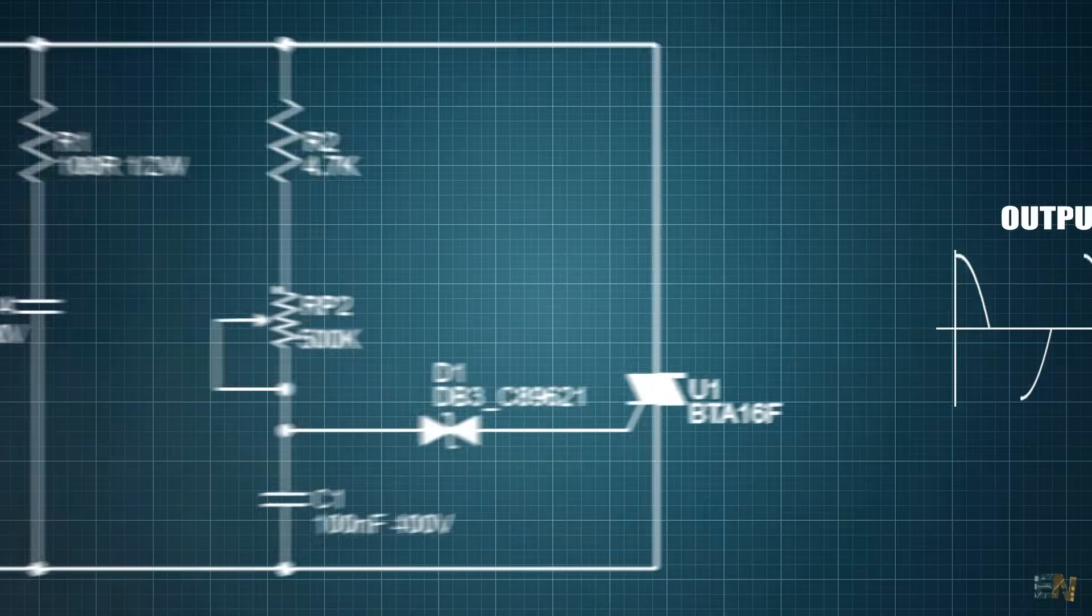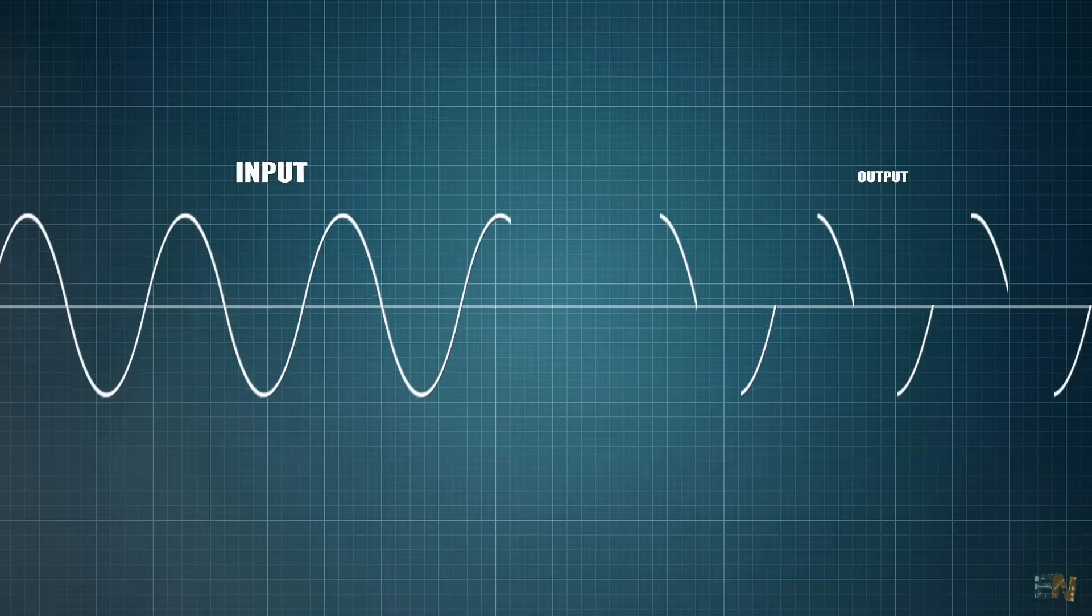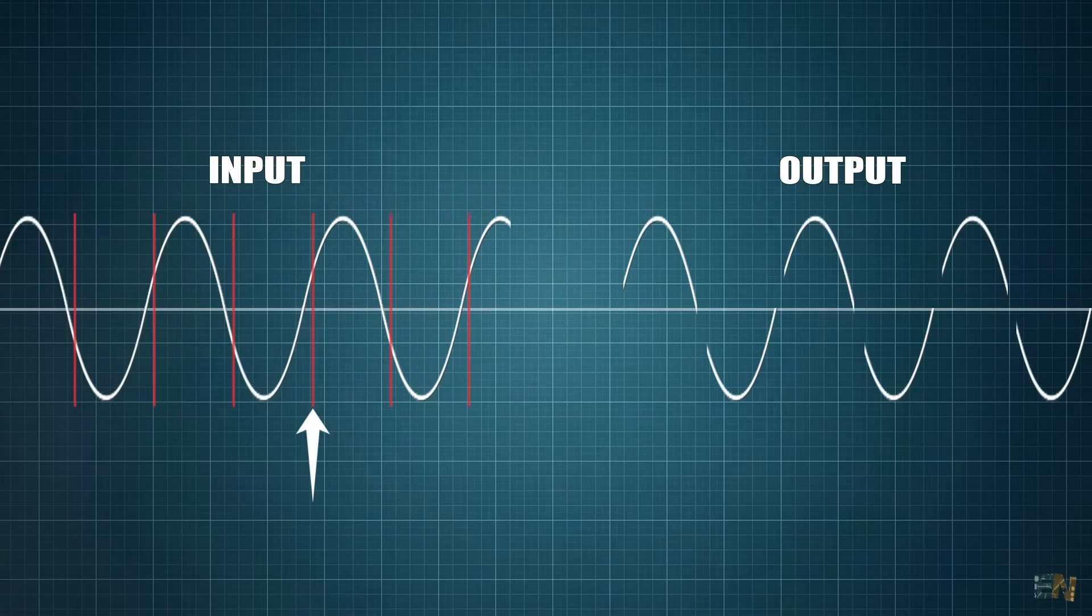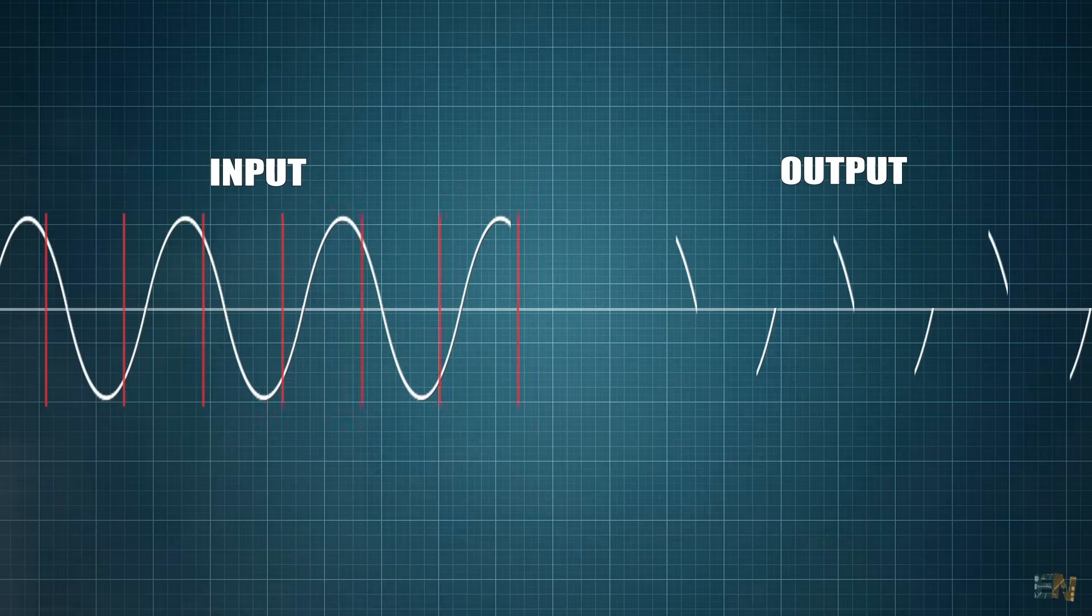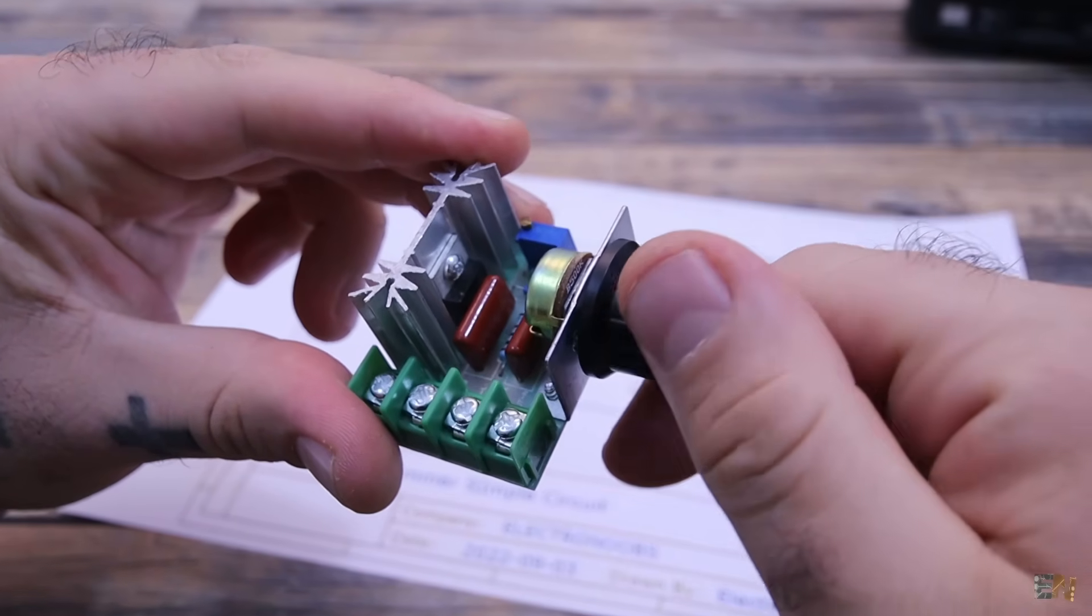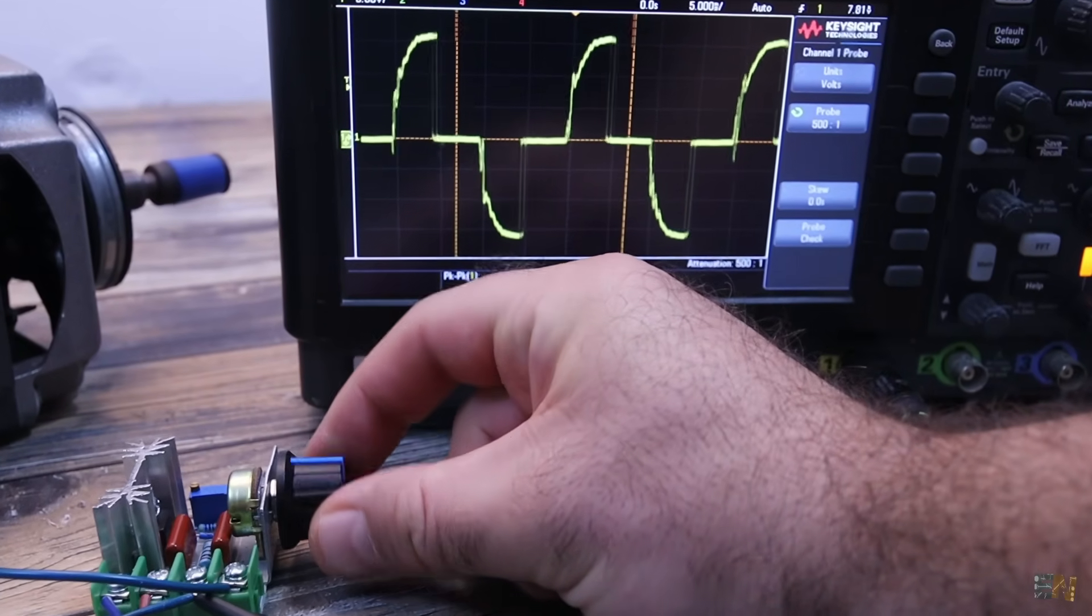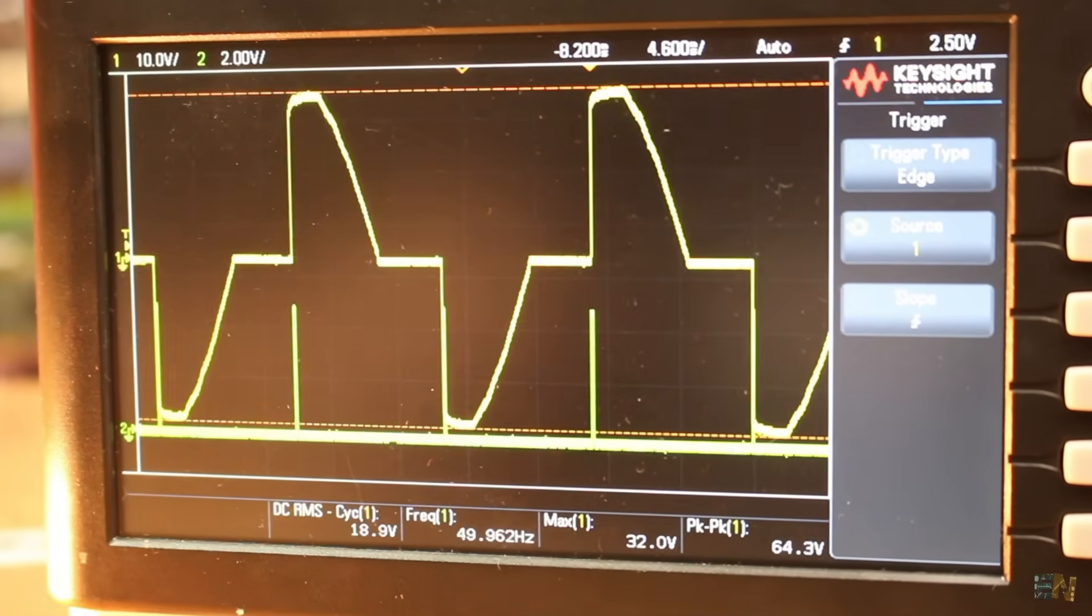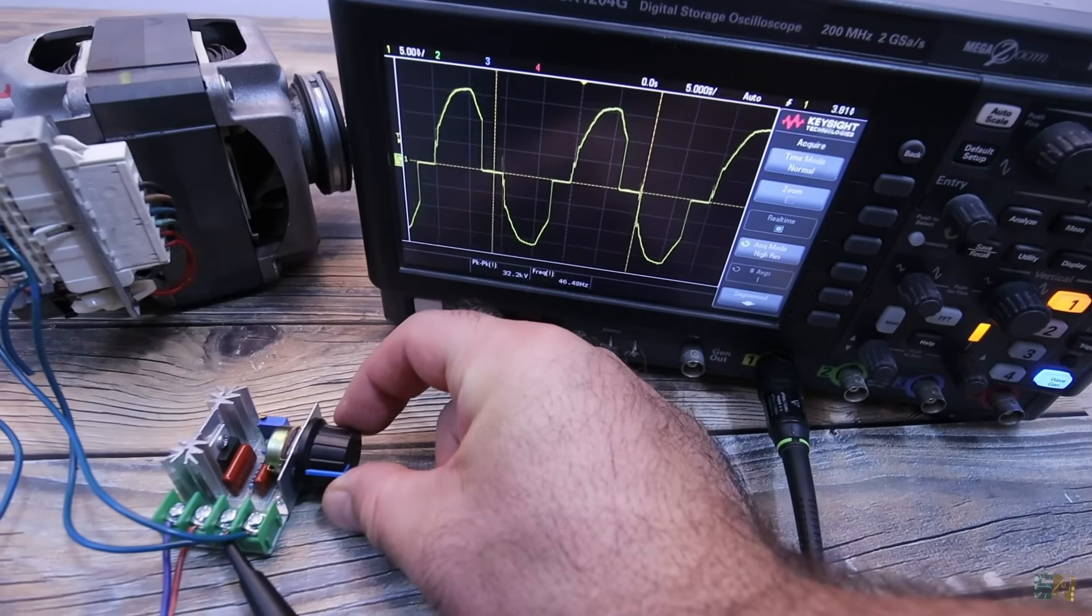The capacitor charging speed is affected by this resistor value. The higher the resistor value gets, the slower the charging process will be, so the firing pulse will be applied later. So the output power will be lower. That's why we use a potentiometer so we could regulate this resistance value, making the charging process faster or slower. With that, we change the firing pulse position so we change the output power. Quite easy, right? So that's how this AC dimmer works.